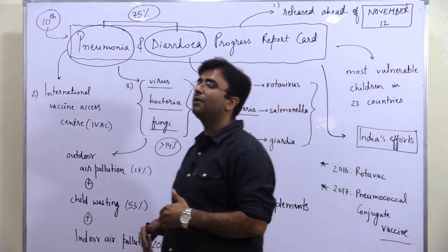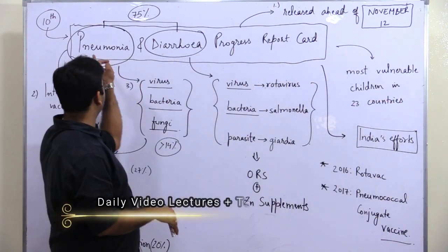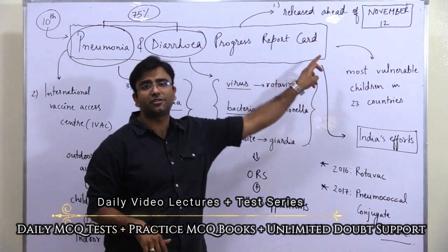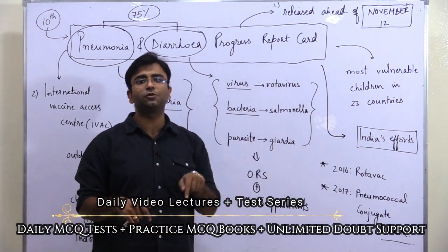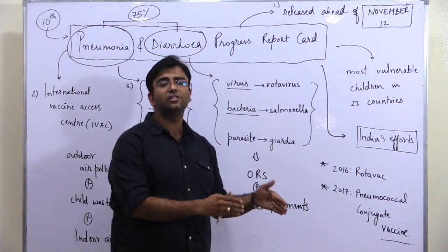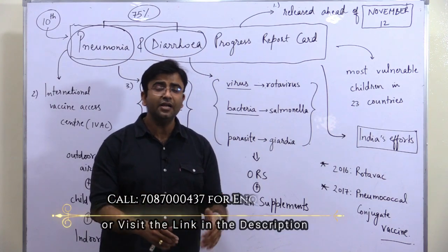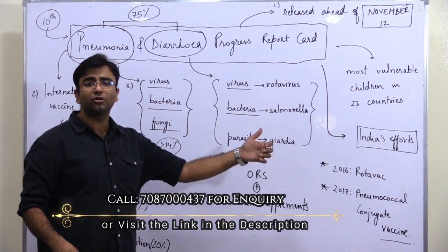This is the important information we have to remember from our prelims point of view about the Pneumonia and Diarrhea Progress Report, the 10th report published before November 12th, 2019. This is all what is important.